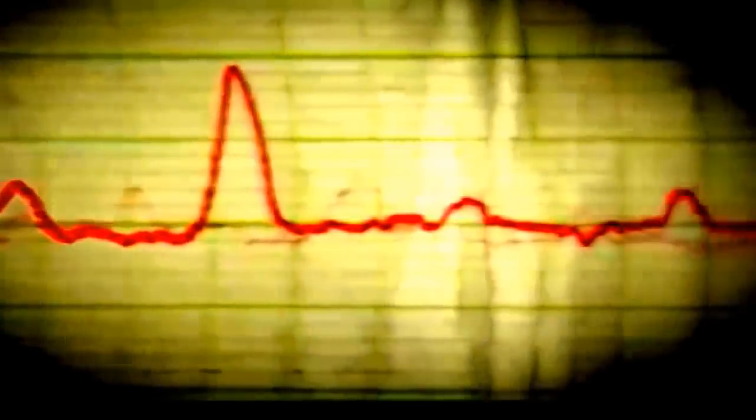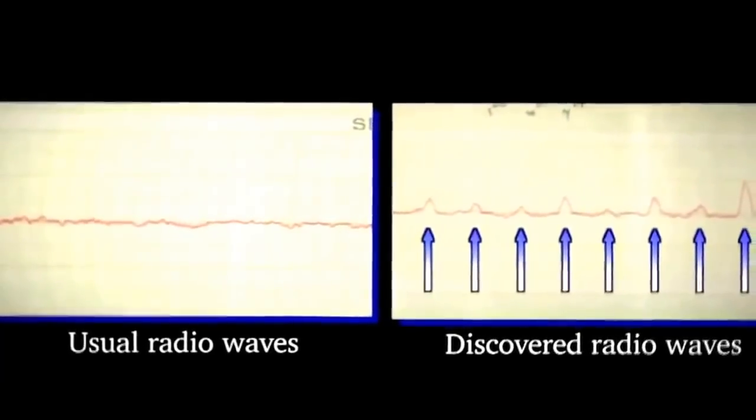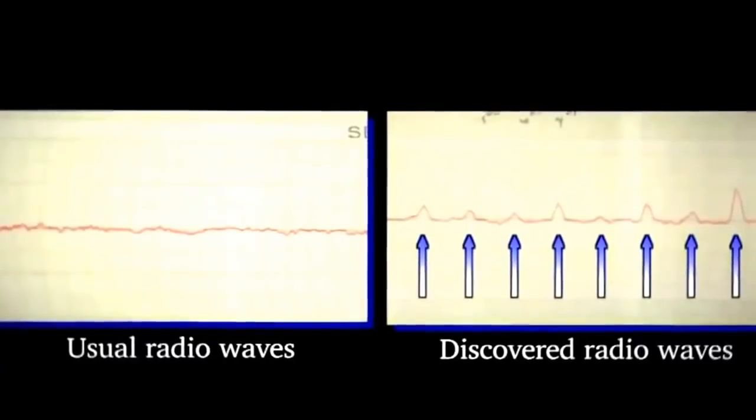This is the actual record of Bell's observations. Usually there were hardly any undulations, but on this day she detected some regular pulses. The regularity of the intervals is indicated by the arrows, and the signals were strong.